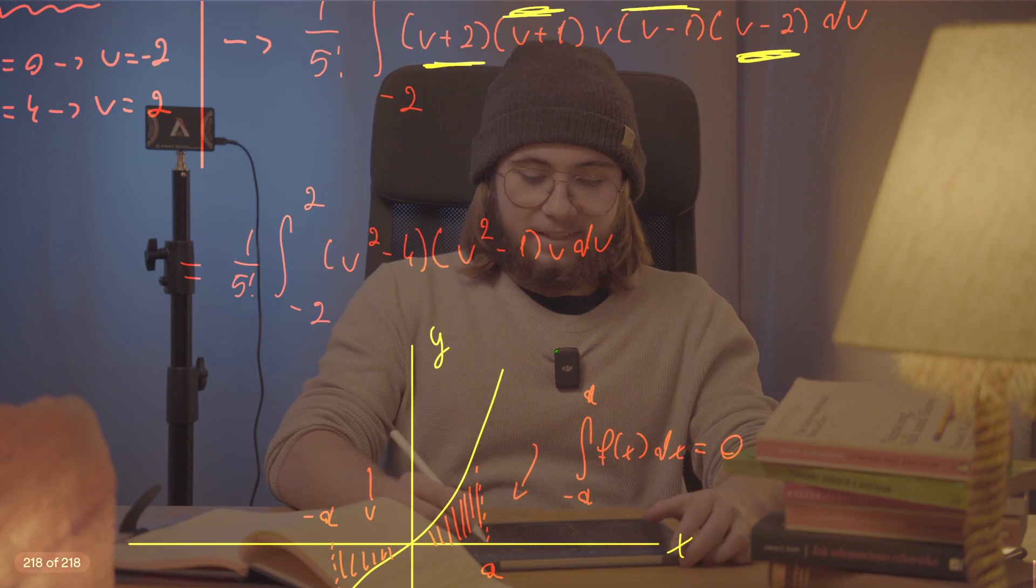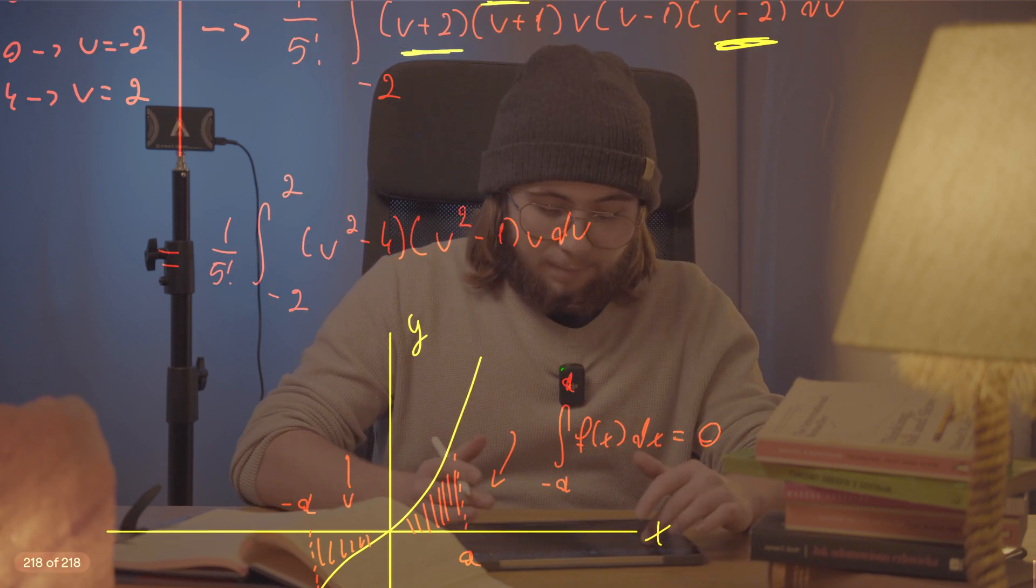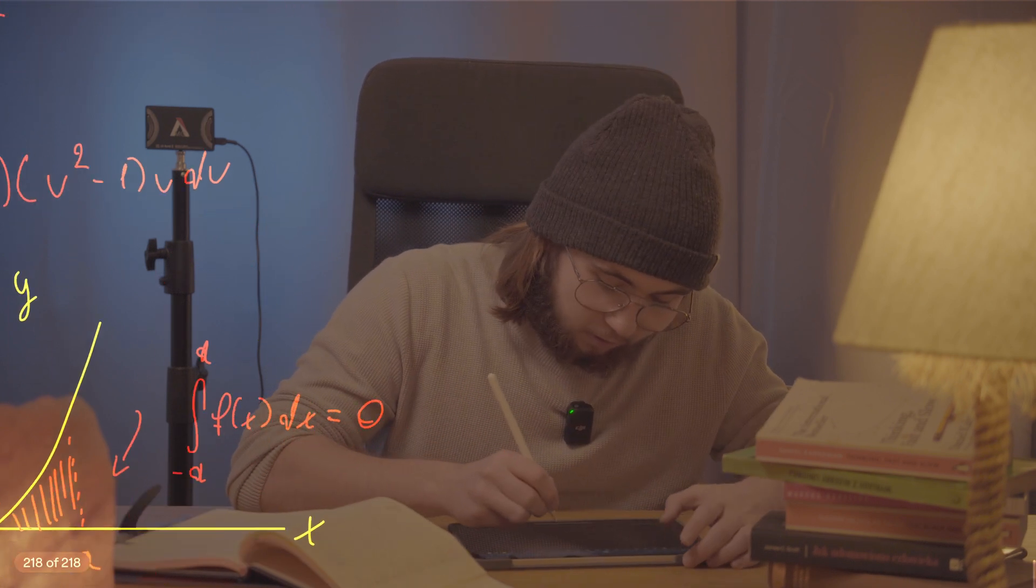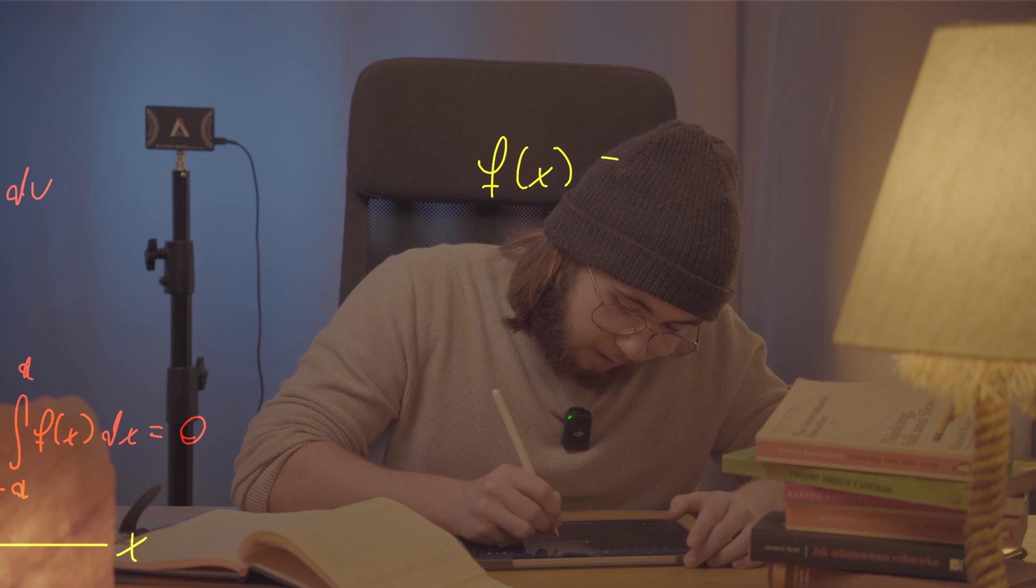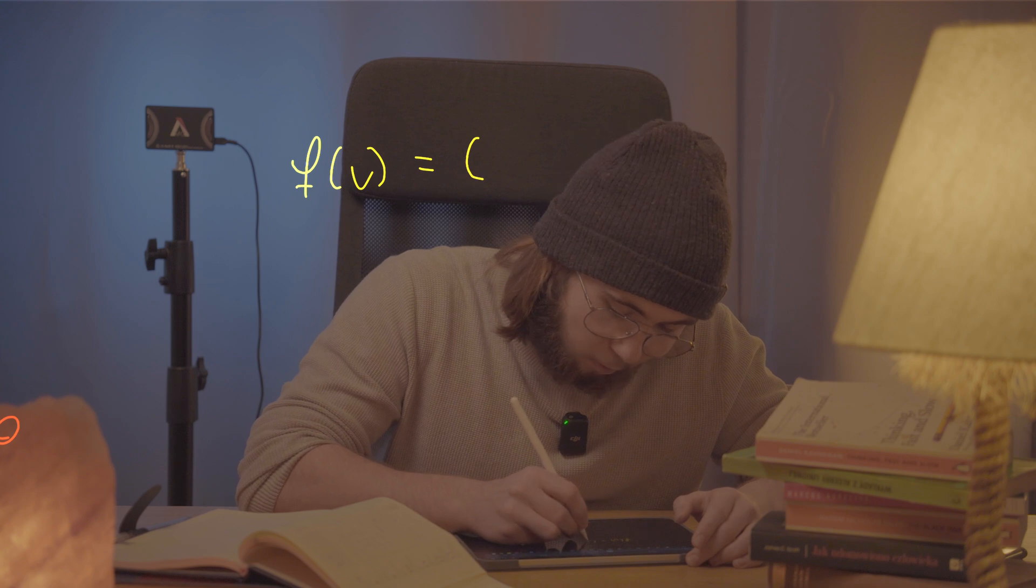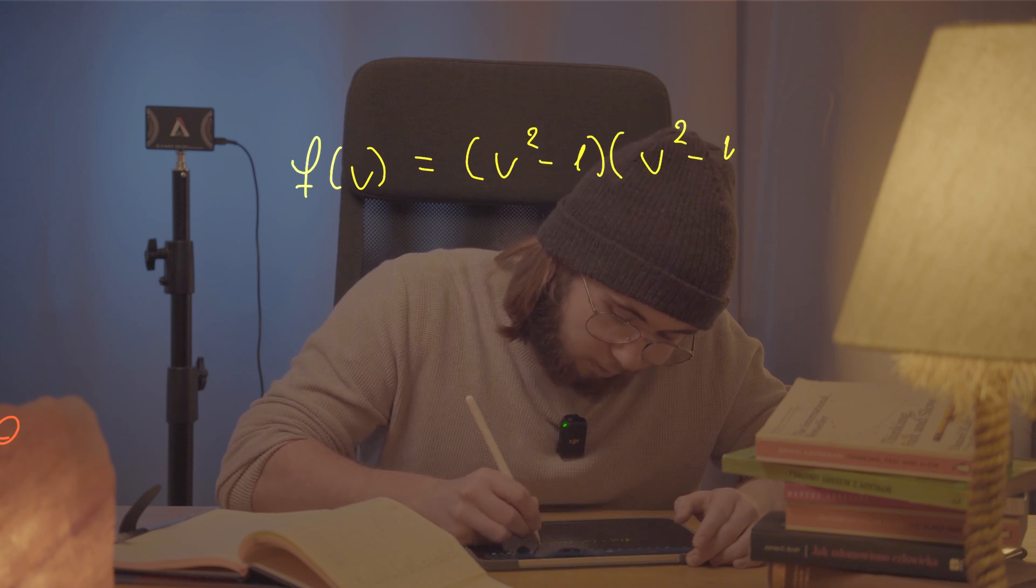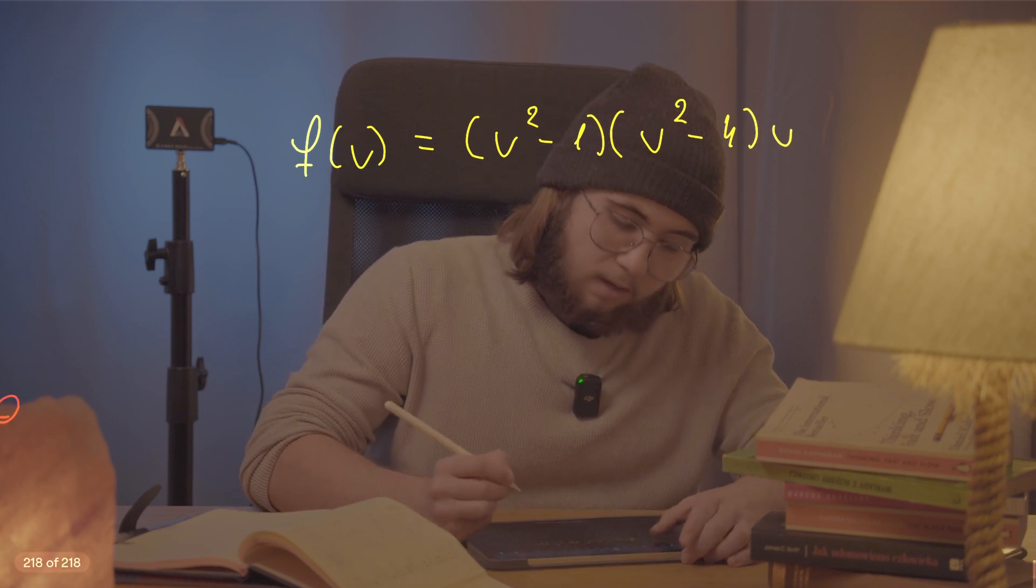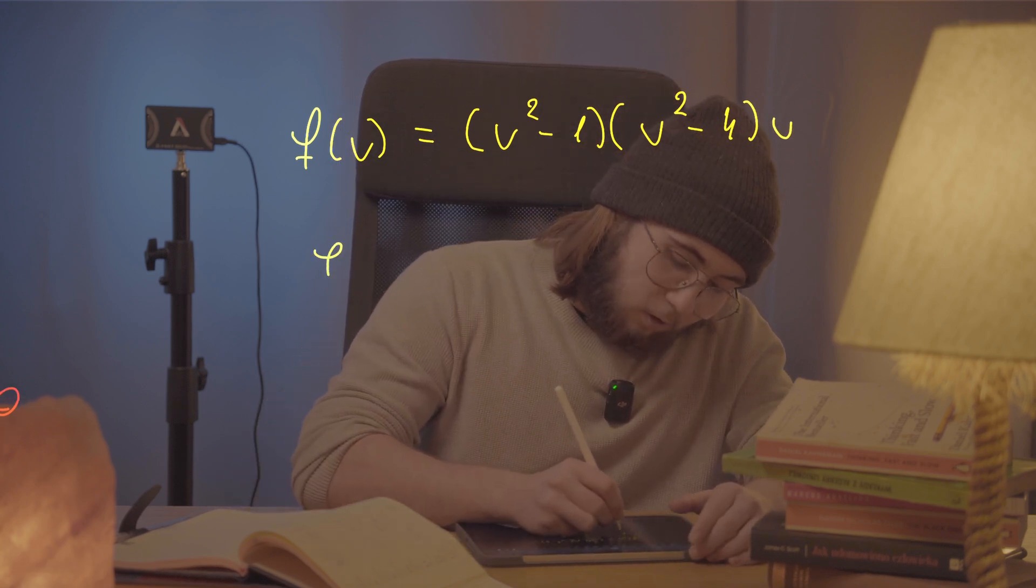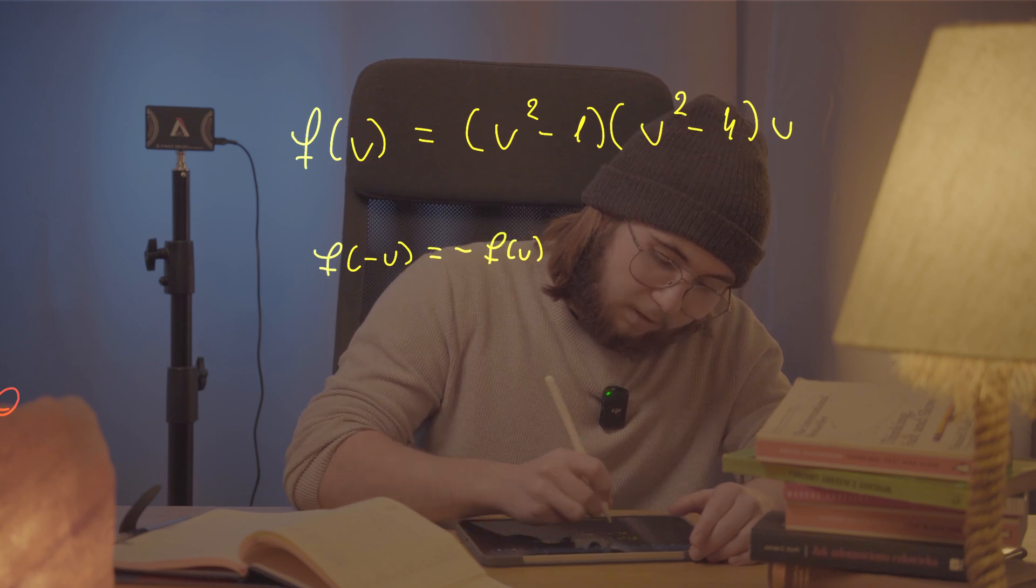And the nice thing is that this thing is odd. How do we know that? I mean, let me just denote our function as f of u. So, f of u is gonna be u squared minus one times u squared minus four times u. We know that f is odd whenever f of negative u is equal to negative f of u. And so, let's check if it's true.